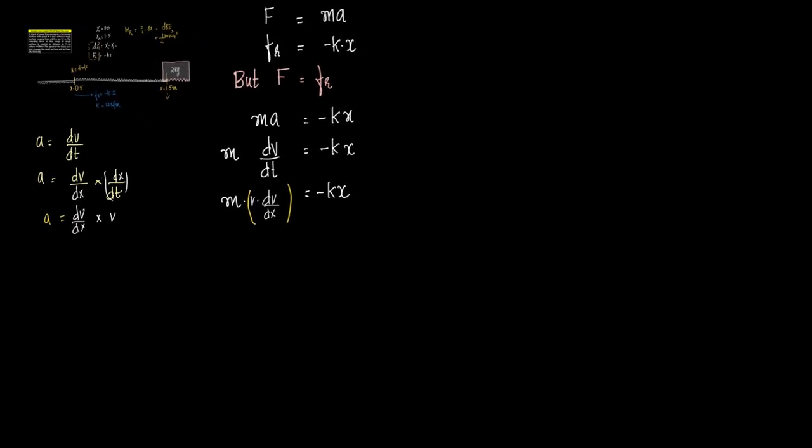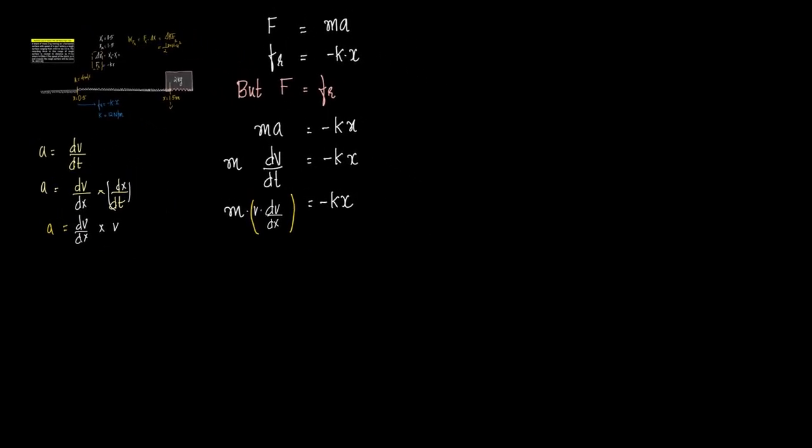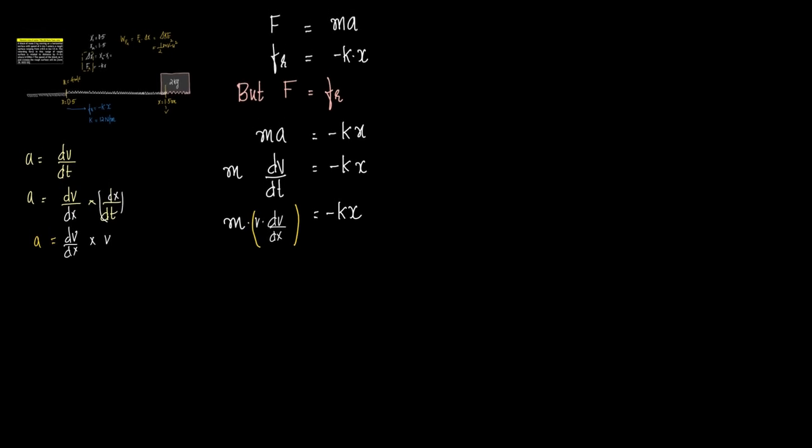What next? So we can write this further as m into v into dv is equal to minus kx into dx. So now this is the variable separable form. This is in the variable separable form and thus can be integrated. So we can write this as m v into dv is equal to minus k into x into dx. And now this can be integrated.